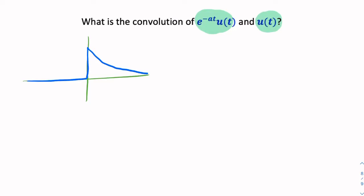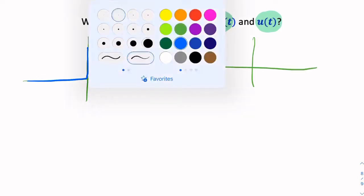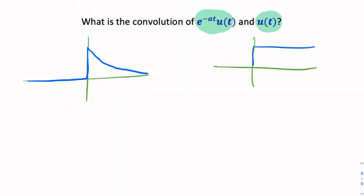And we're convolving it with another signal u of t. So you can try to imagine how this would look graphically, but mathematically it's really straightforward. So the definition of convolution of two signals x of t convolved with y